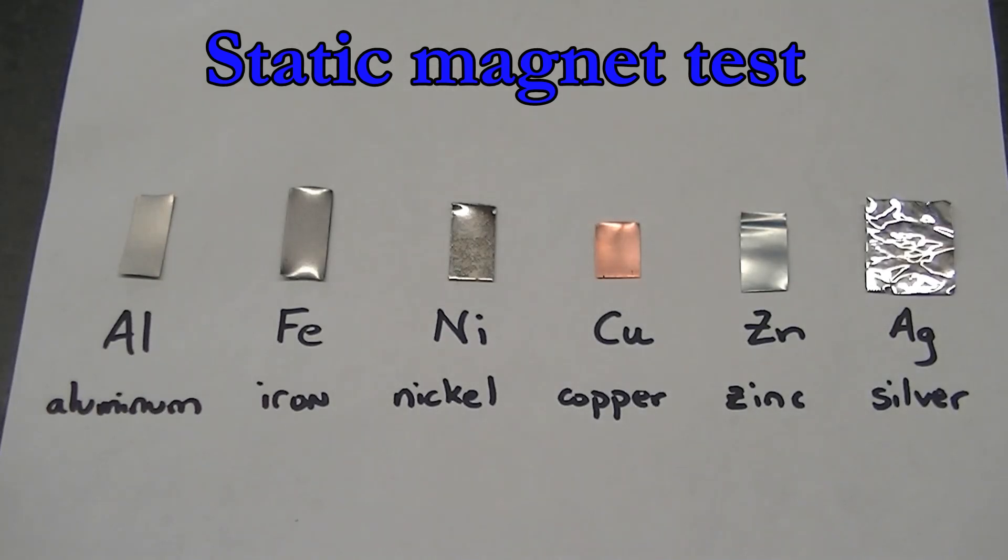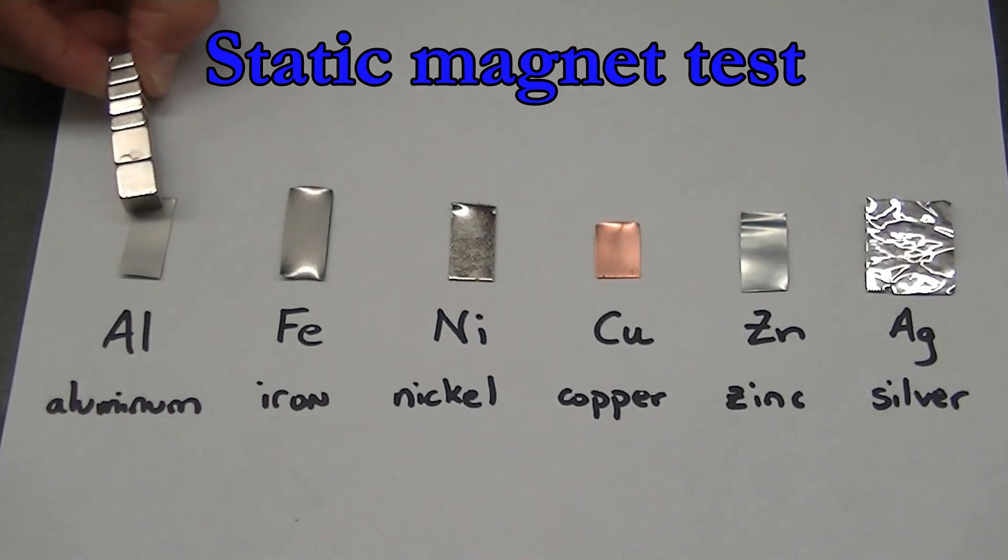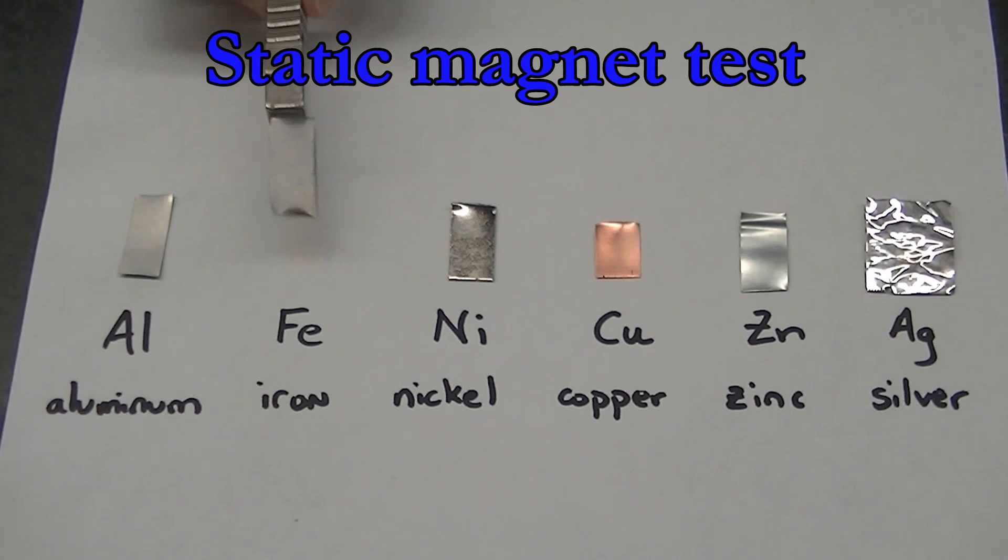Let's see which metals are attracted to a strong magnet. Aluminum is not. Oh wow, but iron sure is.